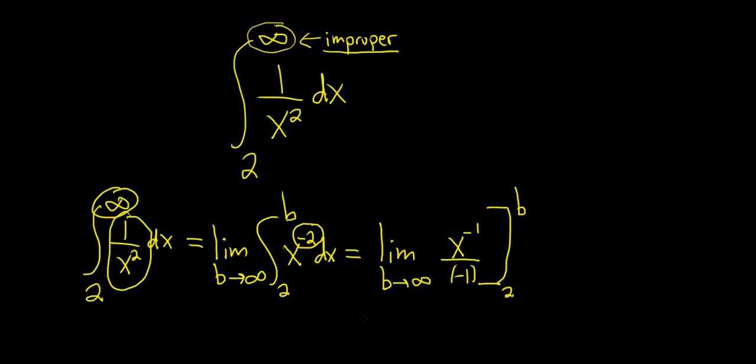Let's go ahead and rewrite it again. This is the limit as b approaches infinity of negative 1 over x. And we're going from 2 to b.